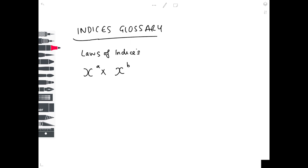There are some key laws of indices to go over. If you are multiplying indices together, the simple thing you can do is add the powers: x to the a times x to the b equals x to the (a+b).